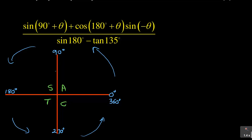All Students Take Chemistry — and what you have: 'All' means sin, cos, and tan are all positive in the first quadrant, so this becomes quadrant one. In the second quadrant, only sin is positive. In the third quadrant, only tan is positive. And in the fourth quadrant, only cos is positive.